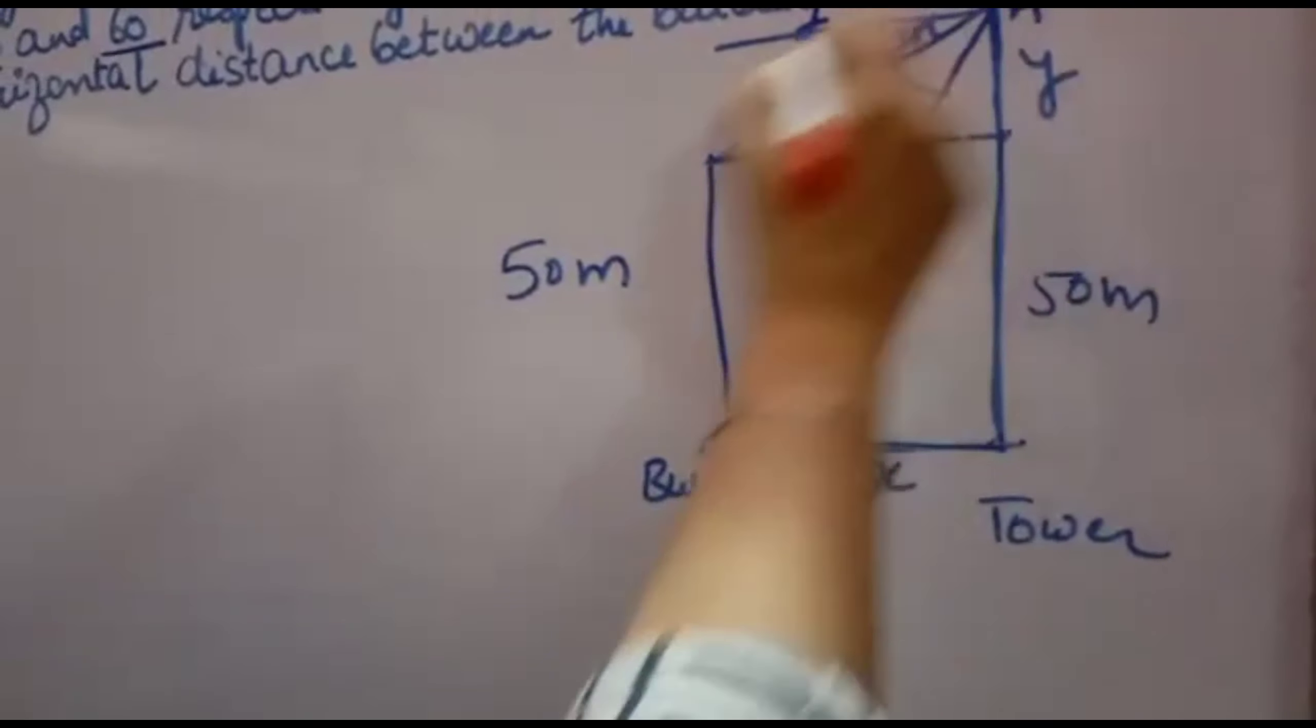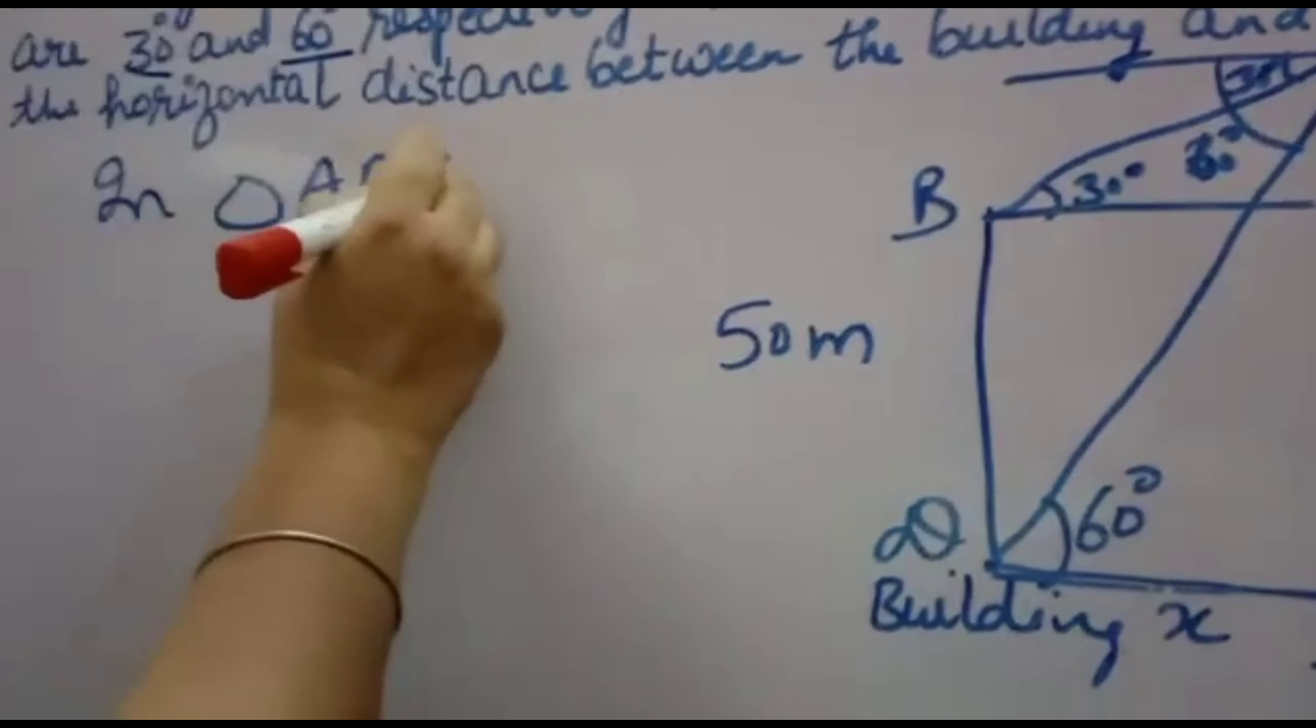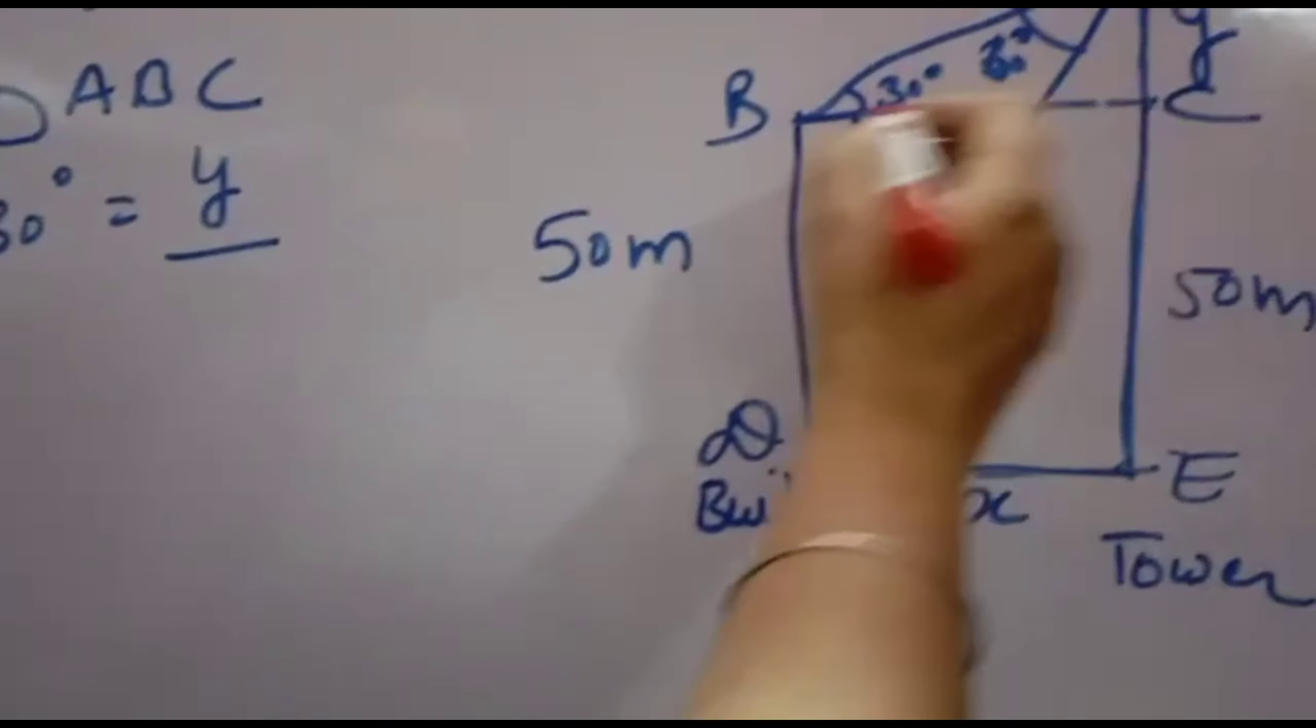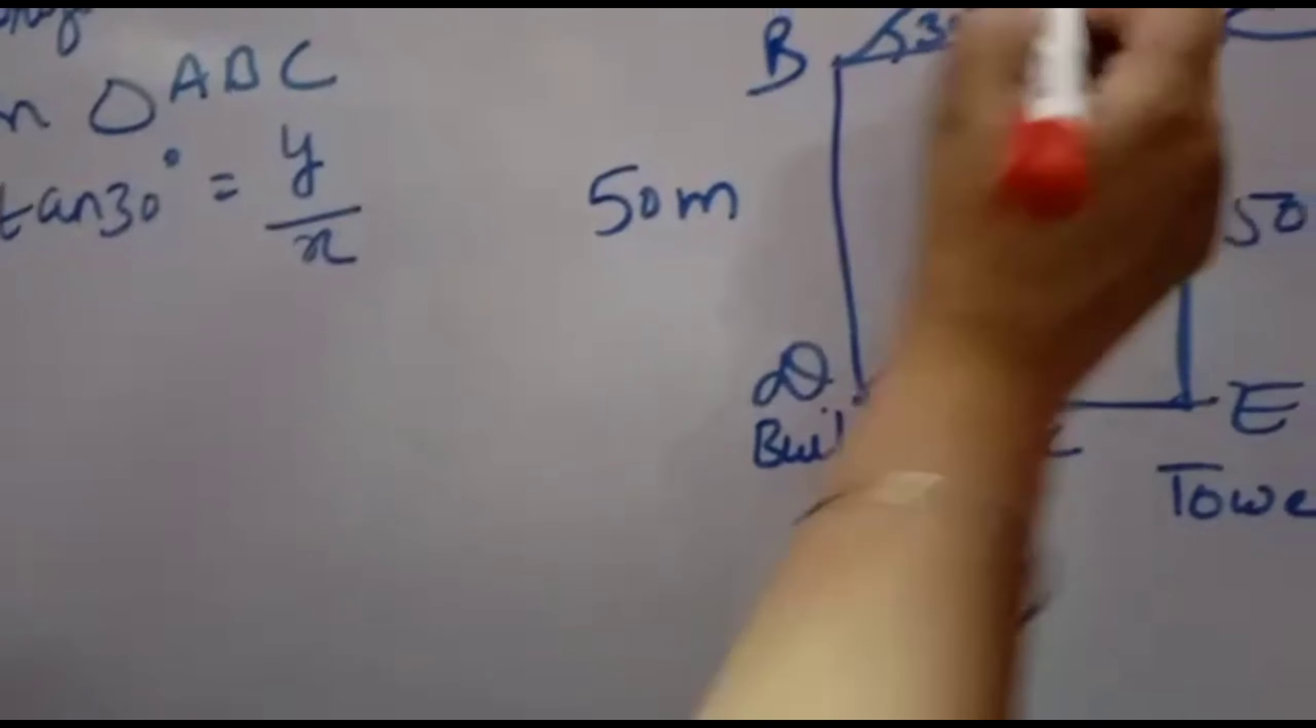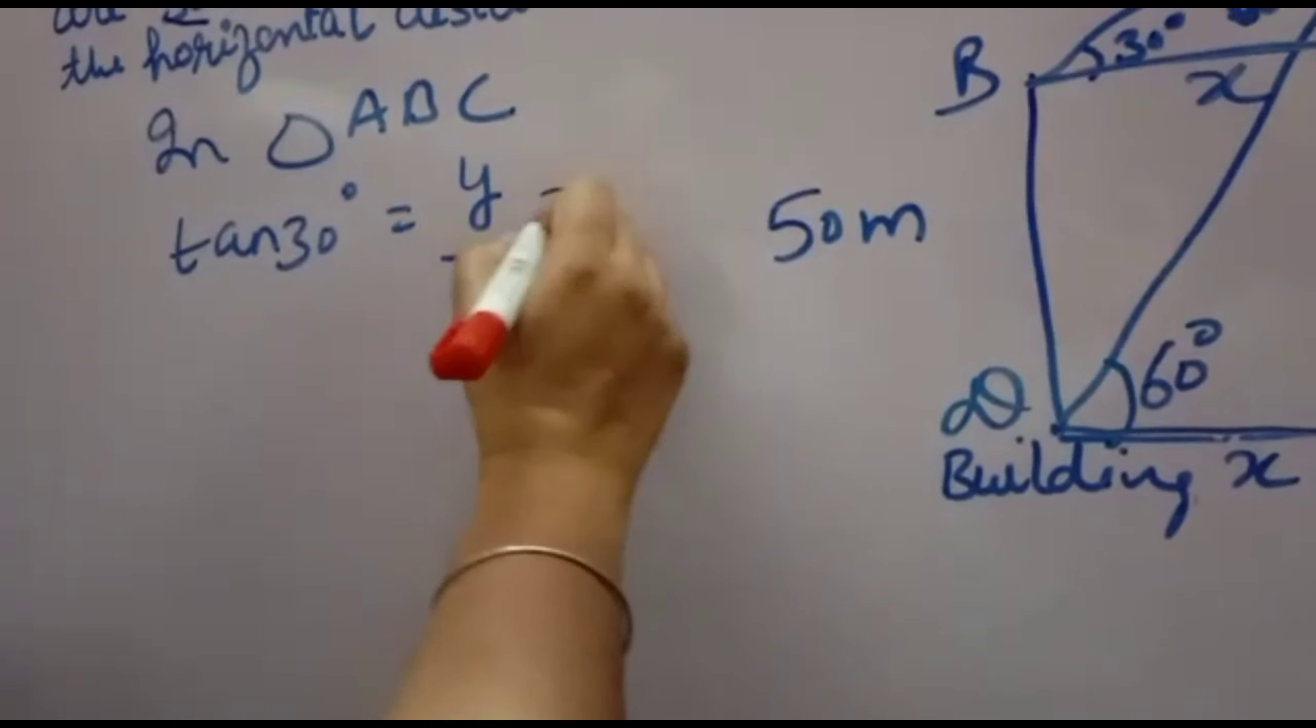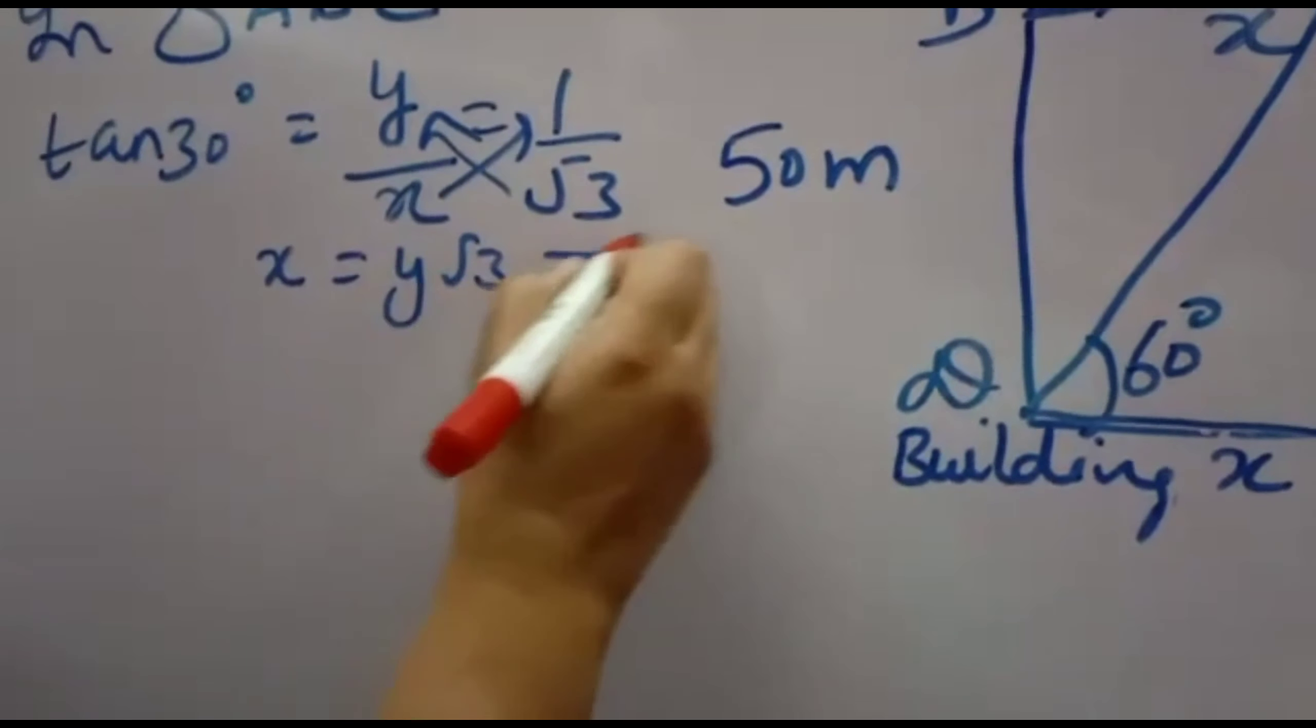The horizontal distance between building and tower. So firstly, we will take suppose this is a, this is b, this is c, this is d and this is e. In triangle ABC, you will write tan30 is equal to perpendicular over base. Perpendicular is y and base is x. Because this is x, this will also come x. Now what is tan30? tan30 is equal to 1 over root 3. So from here you will get cross multiply. x will come equal to y root 3. This is first equation.